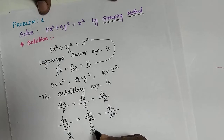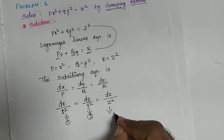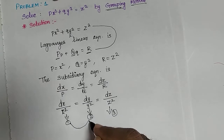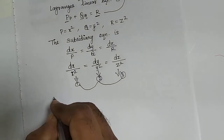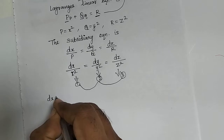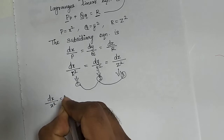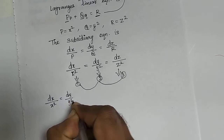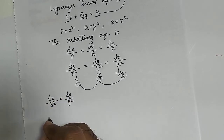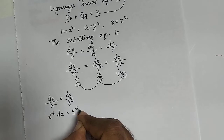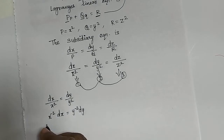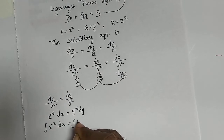To apply the grouping method, label these as parts 1, 2, and 3. We need only two values, so first take parts 1 and 2: dx divided by x-squared equals dy divided by y-squared. Shifting the denominators to the numerator gives x to the power minus 2 times dx equals y to the power minus 2 times dy.